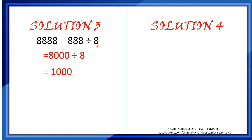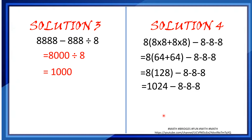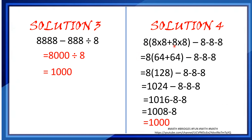Now, the last solution I am showing is: 8 × (8 × 8 + 8 × 8 − 8 − 8) − 8. We solve inside the bracket first: 64 + 64 = 128, minus 8 minus 8 = 112. Then 8 × 128 − 8 − 8 − 8 = 1024 − 8 − 8 − 8. That gives 1008 − 8, which equals 1000. Here also you can count the 8s — that's 8 times. So using addition, multiplication, and subtraction together, this is also one way of getting the answer.